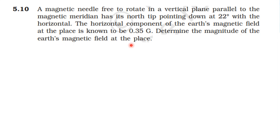At a certain place, the dip angle is known to be 22 degrees. That is, the resultant magnetic field makes an angle of 22 degrees with the horizontal. The horizontal component of the magnetic field is 0.35 gauss.